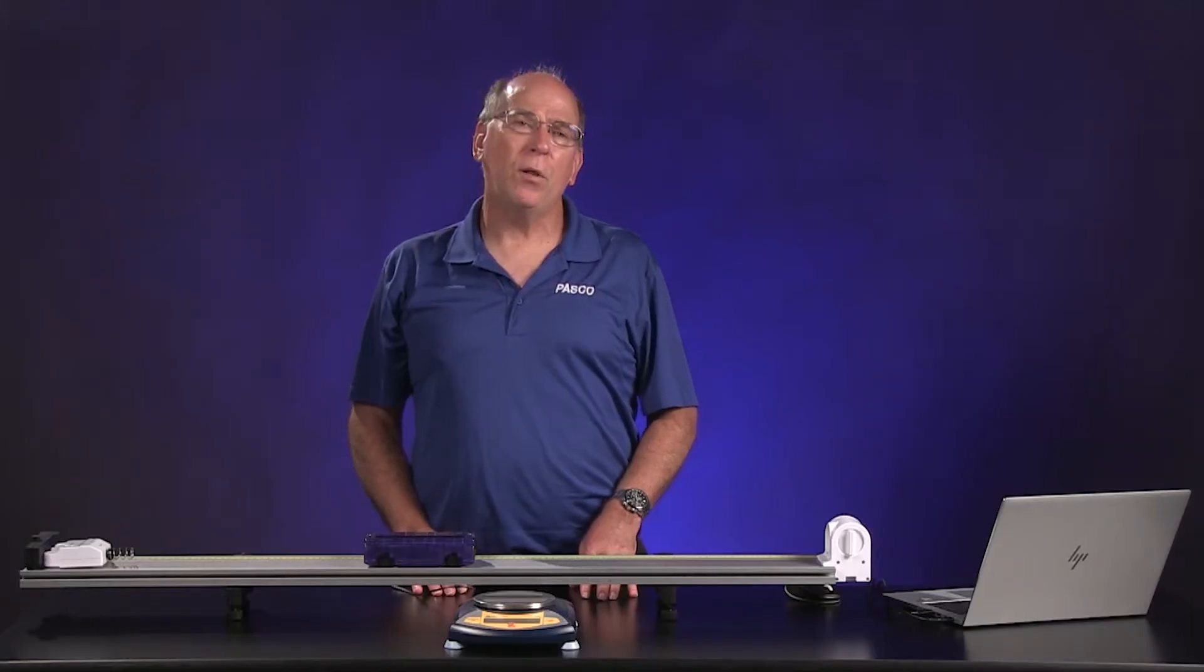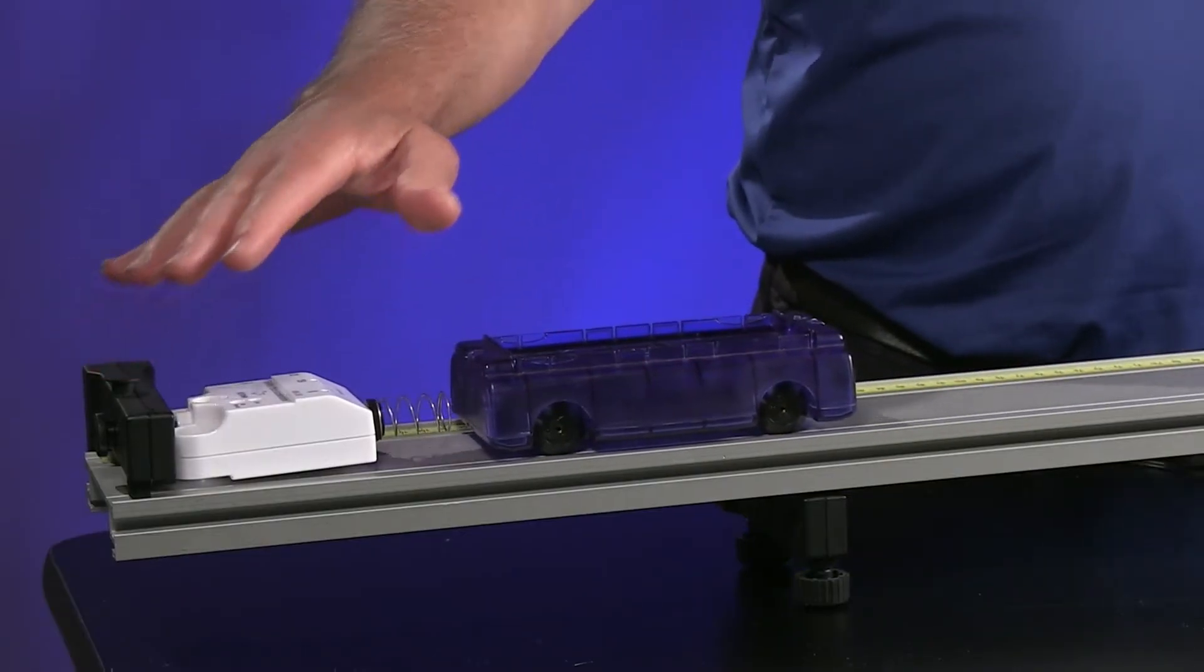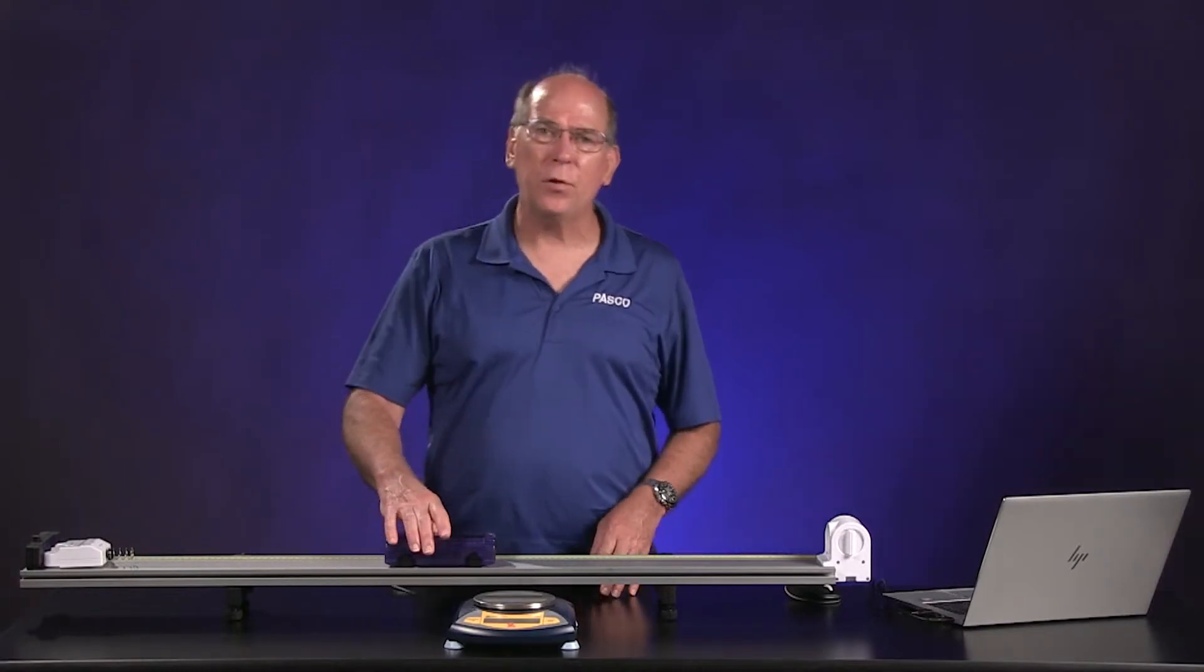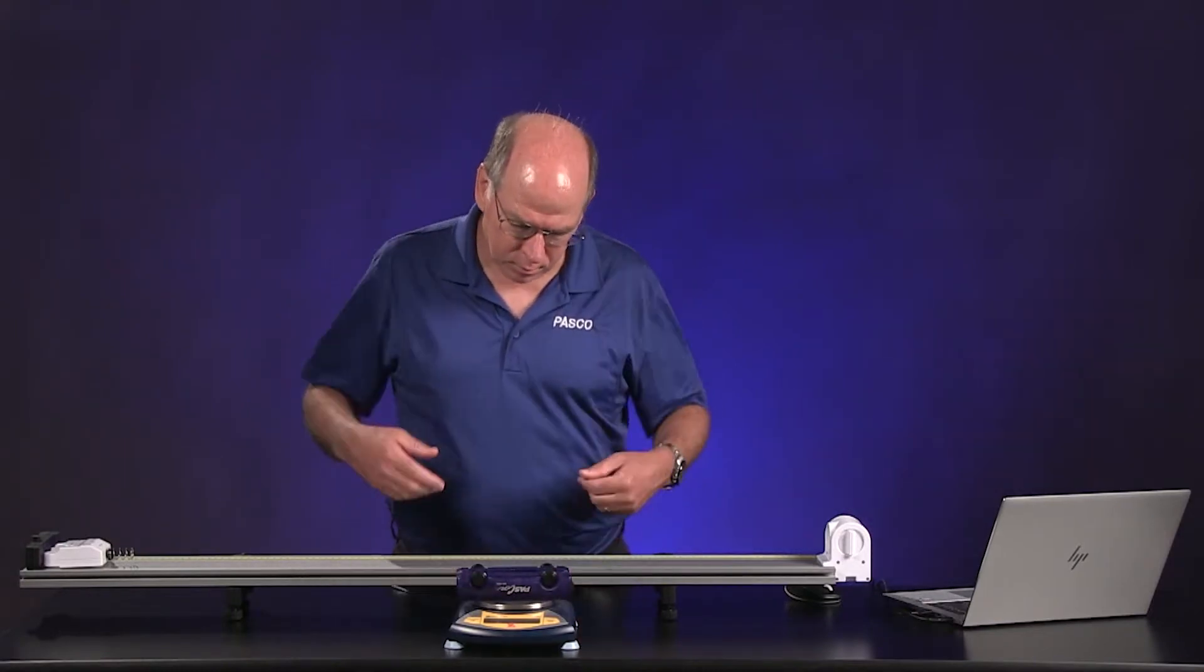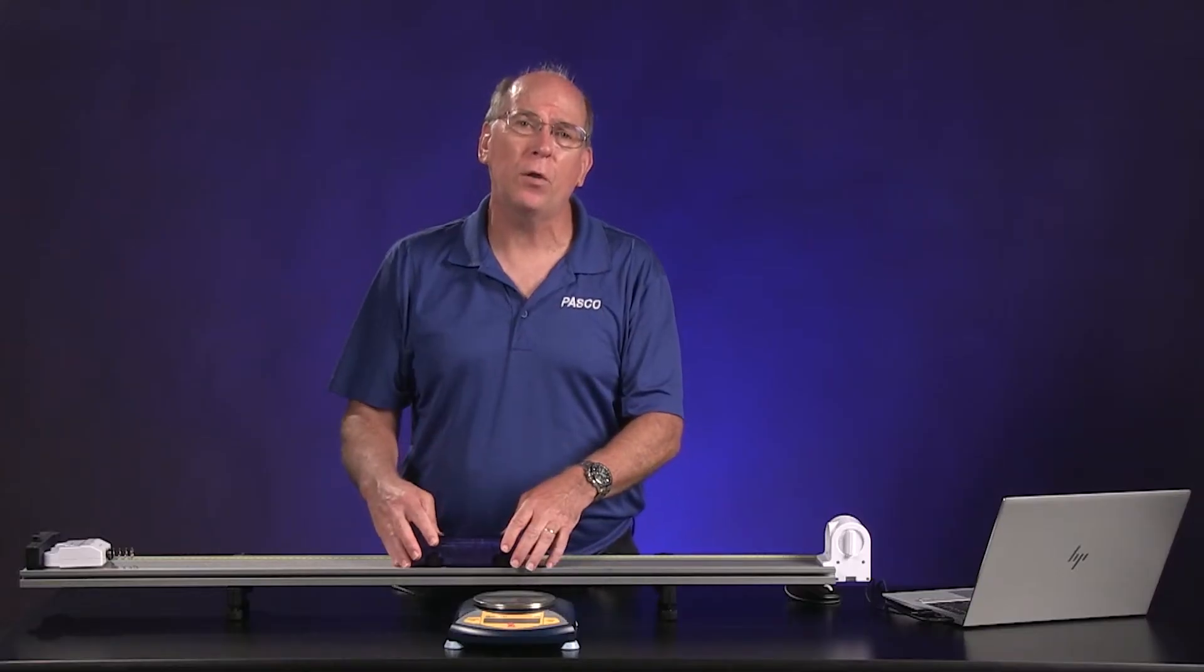We are going to analyze collisions between this cart and the force sensor attached to the end of the track. We need the mass of the cart for the analysis. The mass of the cart is 0.26 kilograms.